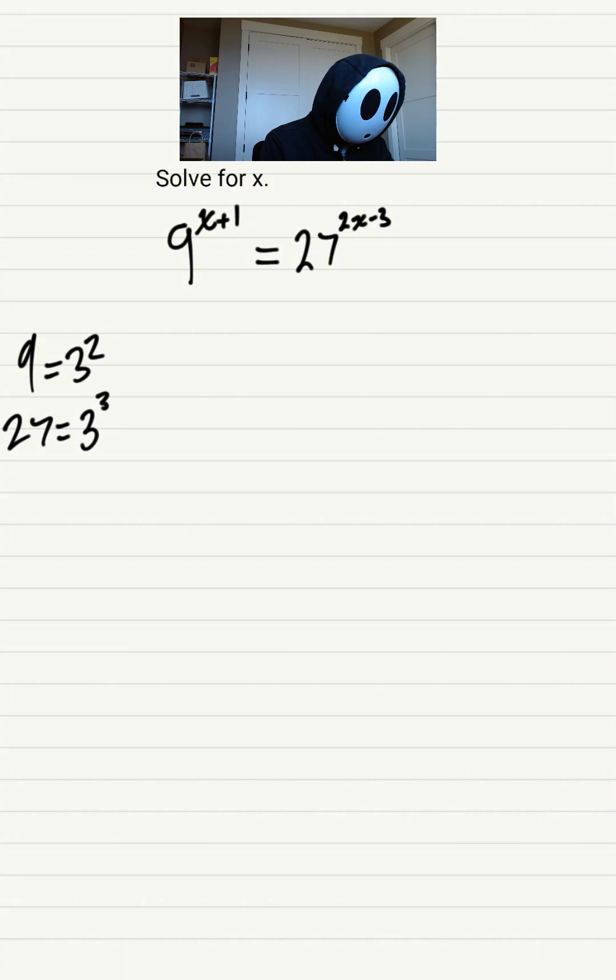Now let's fill that out. 9 is 3 squared to the power of x plus 1. What I did was turn 9 into 3 squared and move x plus 1 over there. We'll do the same thing for 27, so we get 3 to the 3rd power to the power of 2x minus 3.